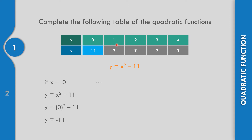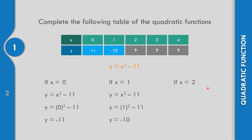What if the value of x equals 1? Replace it into the formula: y equals 1 squared minus 11. That is 1 times 1, which is 1, minus 11. So y equals negative 10. How about if x equals 2? Replace into y equals x squared minus 11: y equals 2 squared minus 11. That is 2 times 2 equals 4, minus 11. So y equals negative 7.